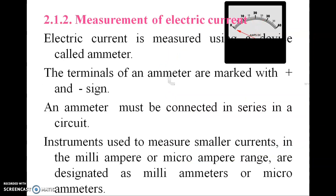Electric current is measured using a device called an ammeter. The terminals of an ammeter are marked with plus and minus signs. An ammeter must be connected in series in a circuit. Instruments used to measure smaller currents in the milliampere or microampere range are designated as milliammeters or microammeters.